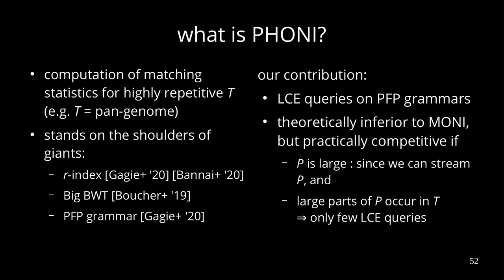Finally, what I've shown you is a new way to compute matching statistics with highly repetitive text collections, like pangenomes. It stands on the shoulders of giants: the r-index, a space-efficient construction of the r-index, the big BWT, and PFP grammars. Our contribution is that we can now do LCE queries on PFP grammars. Unfortunately, we are theoretically inferior to MONI, but in practice we are competitive — especially if P is large, because we can stream P and don't have to store it in RAM. And if large parts of P occur in the text, then we only have a few LCE queries, and for the time bounds we are also kind of competitive. Thanks for listening.